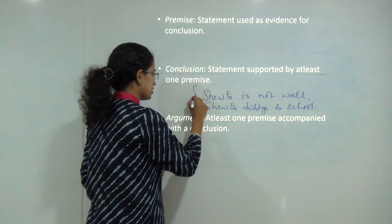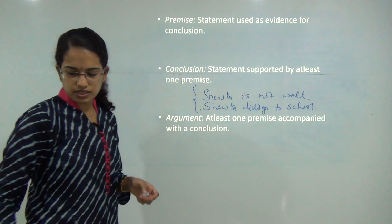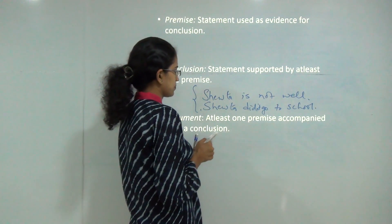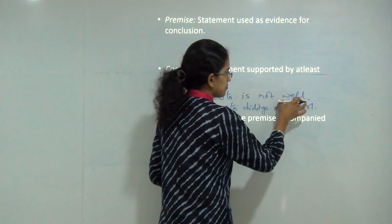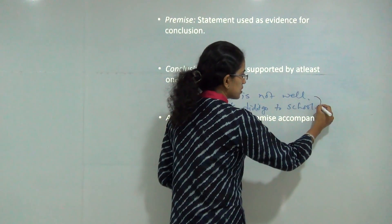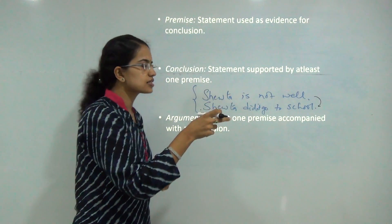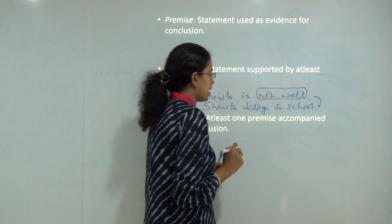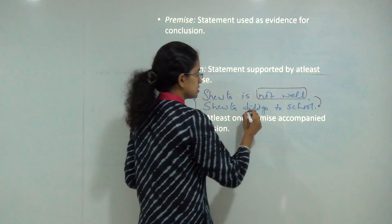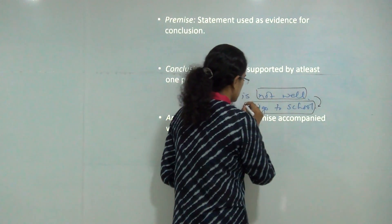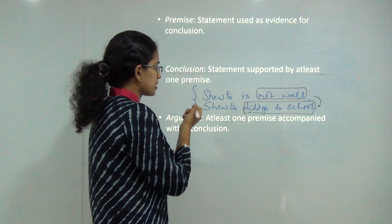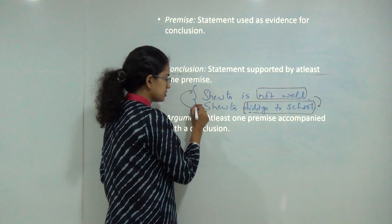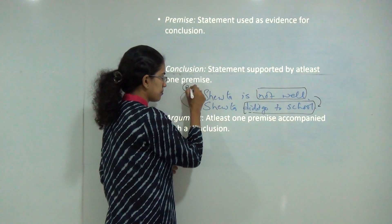Now if I go through these two sentences, what would be a premise and what would be a conclusion? Premise is an evidence which is leading to a conclusion. So my evidence is that Shweta is not doing well, and my conclusion here would be she did not go to school. Conclusion is always supported by a premise.